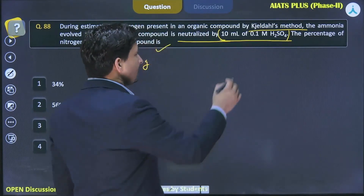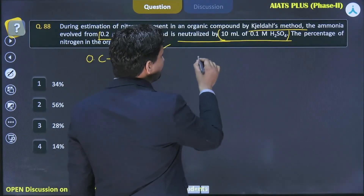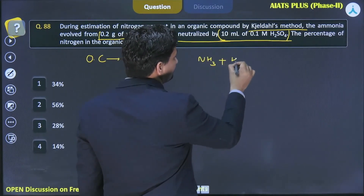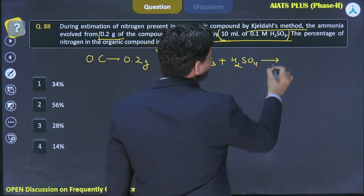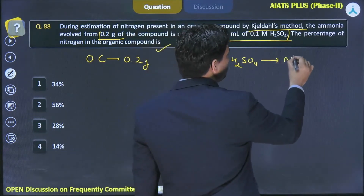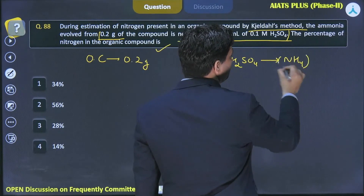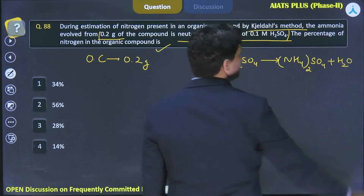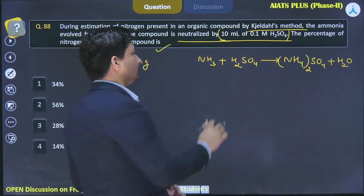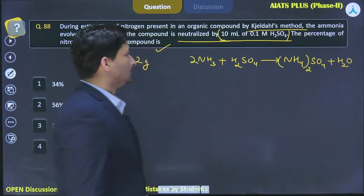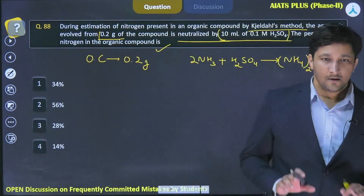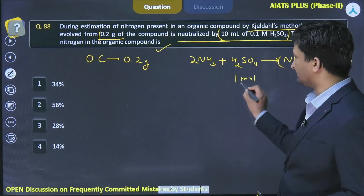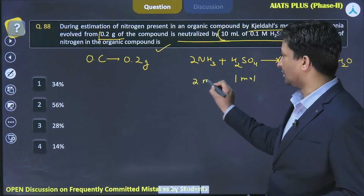If you look at the balanced chemical equation, ammonia reacts with H₂SO₄ and forms ammonium sulphate: 2NH₃ + H₂SO₄ → (NH₄)₂SO₄. One thing is very clear: one mole of H₂SO₄ is basically reacting with two moles of ammonia.